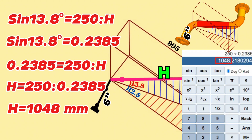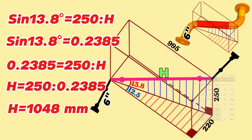1048 millimeters is the hypotenuse of the vertically blue right triangle and is also the distance between the centers of the 6 inch butt weld elbows. So the overall length between the centers of the butt weld cut elbows is 1048 millimeters.